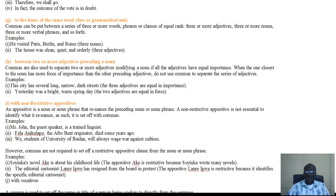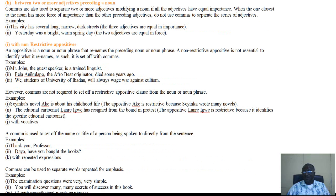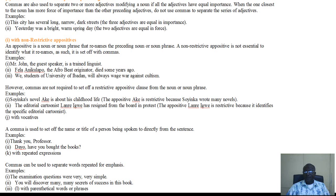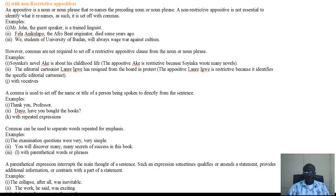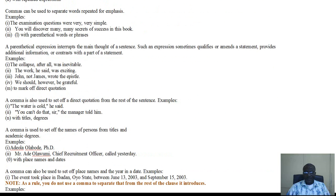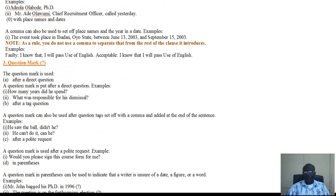A comma can similarly be used between two or more adjectives which precede a noun. In other words, these adjectives come before the noun. An example: This city has several long, narrow, dark streets. So long, narrow, dark are three adjectives which are of equal importance. A comma can also be used to separate words for the sake of emphasis.